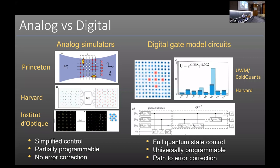Let me take a couple of minutes to talk about Rydberg quantum simulators — really a comparison between analog simulation and digital gate model circuits. Analog simulators with Rydberg atoms have been demonstrated by a number of groups, with the most impressive results from the Harvard group and the French group of Rouesse. These analog simulators have simplified control compared to digital gates, are partially programmable, don't really have error correction, but are somewhat easier to work with. The digital gate model circuit approach has full quantum state control, is universally programmable, and has a well-defined path to error correction. These two approaches are really complementary.